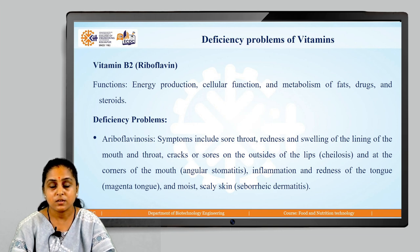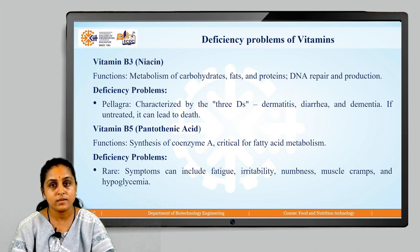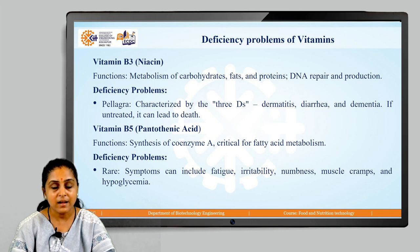Additional symptoms of ariboflavinosis include inflammation and redness of the tongue and moist scaly skin. Let us move on to the next vitamin, which is vitamin B3, also known as niacin. Its functions include metabolism of carbohydrates, fats, and proteins, as well as DNA repair and production. The deficiency problem associated with vitamin B3 is pellagra, which is characterized by three D's: dermatitis, diarrhea, and dementia. If untreated, pellagra will lead to death.